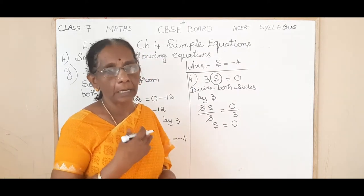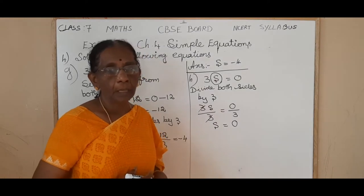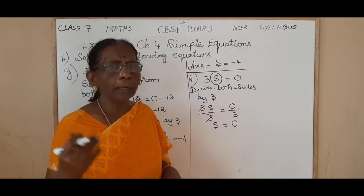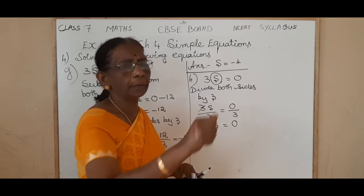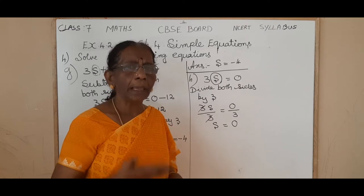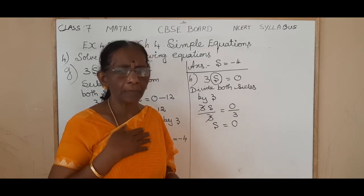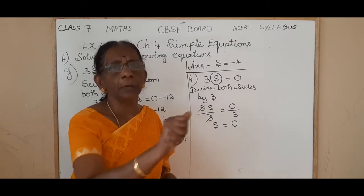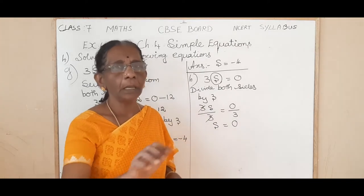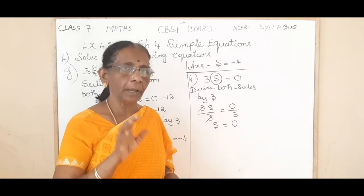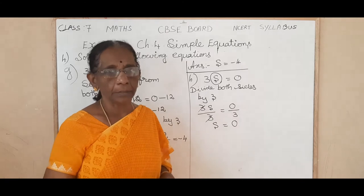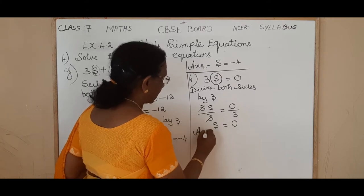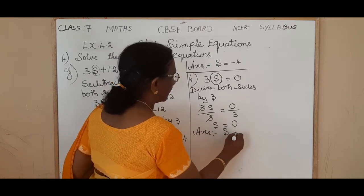Suppose I have 0 chocolates, and those 0 chocolates are to be distributed to however many children — I can only give nothing, because I have only 0 chocolates. So I can give only nothing. So if you divide 0 by any number, the answer will be 0, because 0 means nothing. So the answer is S is equal to 0.